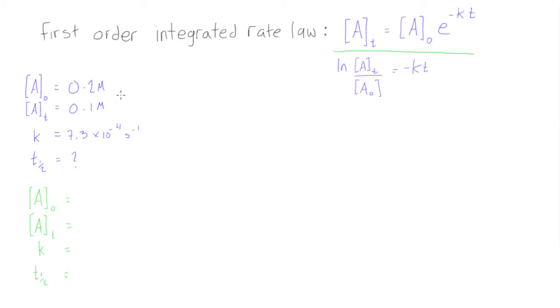Alright, well now we have all the information we need so let's just plug everything into the integrated rate law here and we'll get, we'll take the ln of A at t which is 0.1 over A at 0 which is 0.2. We can close that up and that's equal to negative 7.3 times 10 to the negative 4 per second. And this is going to be times our half-life, t at 1 half.